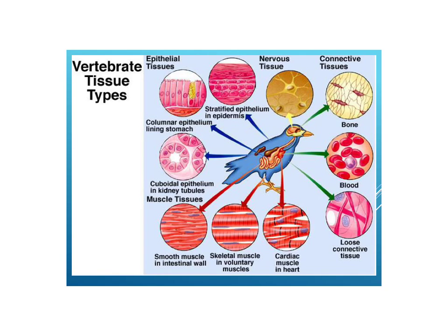Just a brief overview of the four main tissue types in animals. The first is epithelial tissue. Epithelial tissue lines surfaces — interior surfaces such as the lining of the stomach or the lining inside your mouth, the lining around your organs, and also the exterior surfaces such as the skin. Here we have kidney tubules, stomach lining, and then epidermis, the outer skin layer.